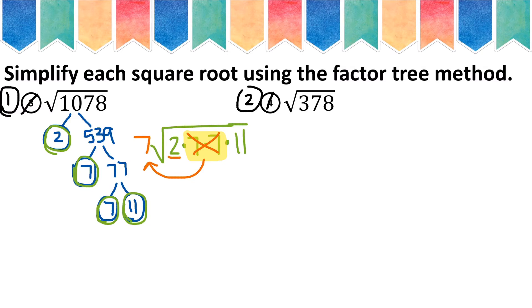The numbers that are by themselves stay where they are. So I'm left with 7 square root 2 times 11. And 2 times 11 would make 22. So my final answer is 7 square roots of 22.